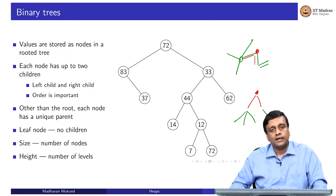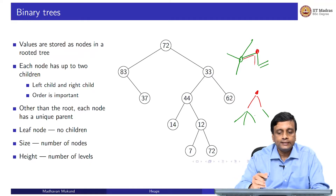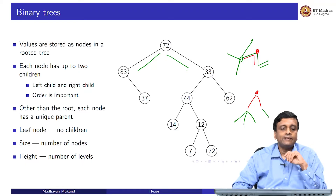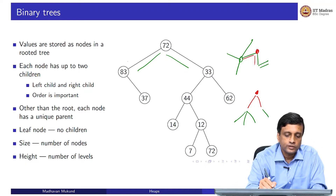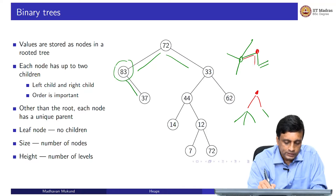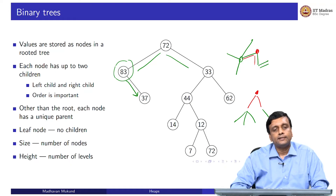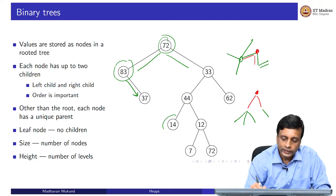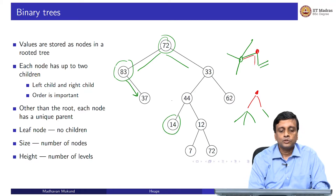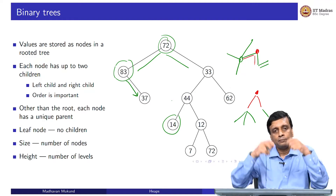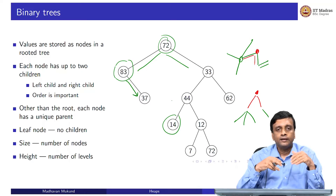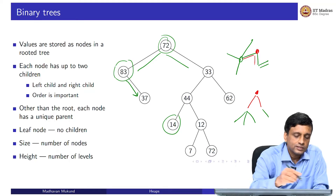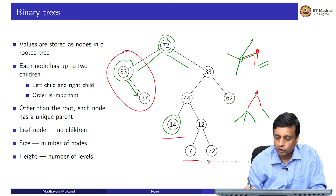We are looking at trees with a particular structure called binary trees. In a binary tree, when held upright, every node has at most two things below it, and these have a direction — left and right. For instance, 37 is the right child of 83, while 83 is the left child of 72, and 14 is the left child of 44. In a binary tree, you can have one or two children.